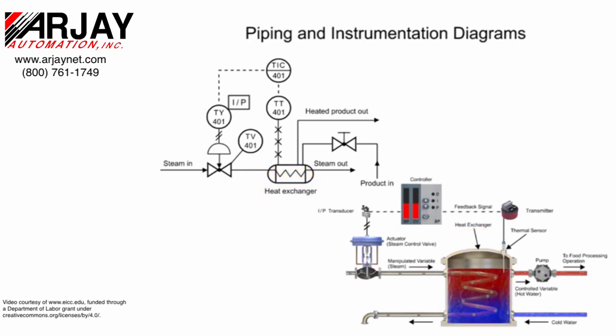To read the control loop, a series of steps are performed. Identification of the control loop is notated by the tag number 401 within the balloons. The valve that allows steam to flow through the pipe is the symbol with two triangles.